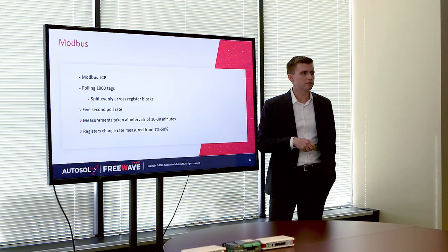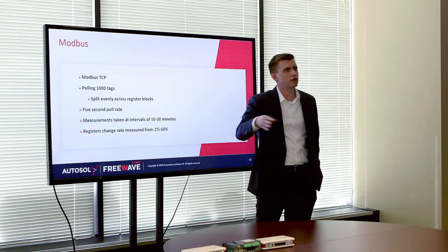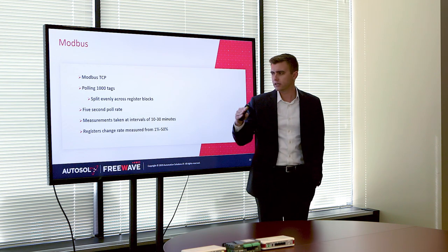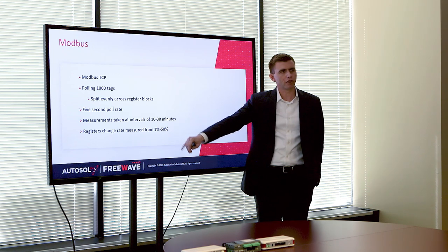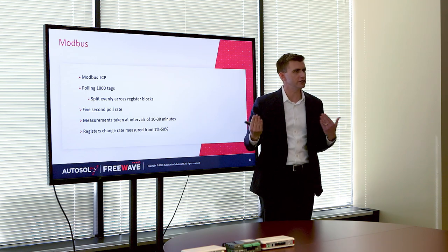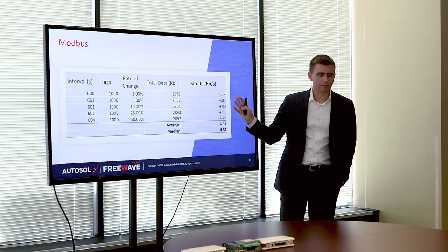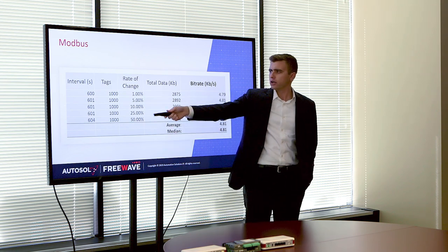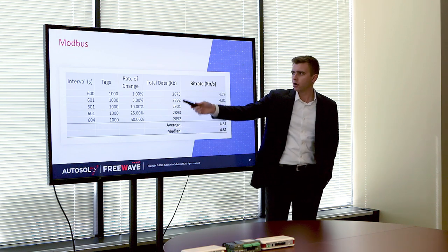The first one we tested was Modbus TCP. We polled 1,000 tags evenly across the four sets of Modbus registers, polled everything at five seconds, and did it at varying intervals between 10 to 30 minutes with varying change rates. So we have 1,000 tags with 1% down to 50% actually changing every five seconds. We have our interval here — 600 seconds, 10 minutes — 1,000 tags, our change rate of 1%, 5%, 10%, 25%, and 50%, and then the total data consumed.